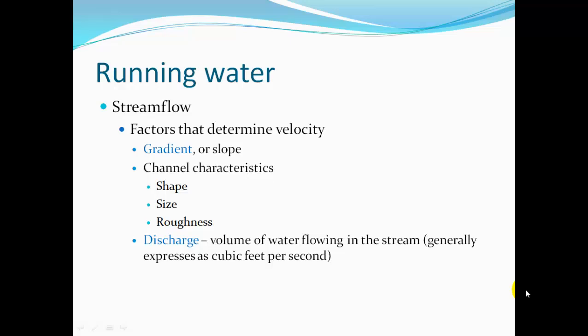Running water — stream flow. Factors that determine velocity are the gradient or slope — how steep is that river channel — and channel characteristics: the shape, whether it's V-shaped or wide and flat; the size of that channel; and the roughness of the bed, whether it's a sandy bottom or full of cobbles and stones. Discharge is the volume of water that flows in the stream, usually expressed as cubic feet per second, or CFS.